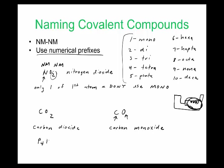Here's an example with larger numbers: P4O10 — four phosphorus atoms and ten oxygens — is called tetraphosphorus decaoxide. It's pretty straightforward to name these and go back and forth. We'll do a bit more practice in class tomorrow.